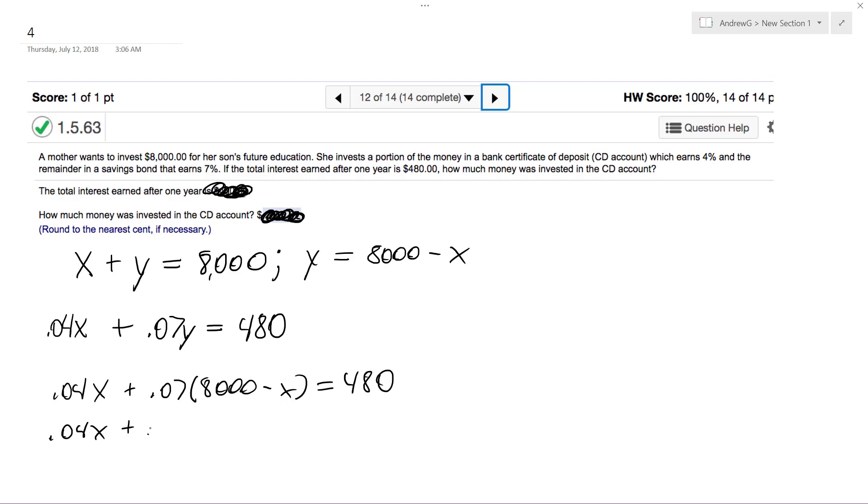0.07 times 8,000, I think it's 560. Yeah, so 560 minus 0.07X equals 480. So then we subtract, so we get negative 0.03. And then on the right side we get 480 minus 560, so we get negative 80.